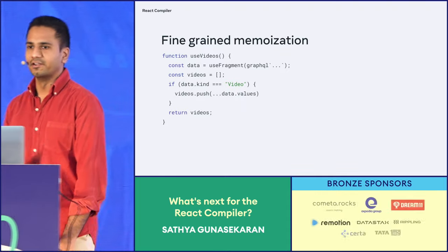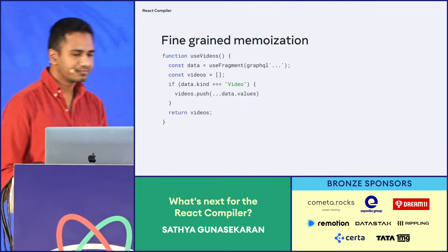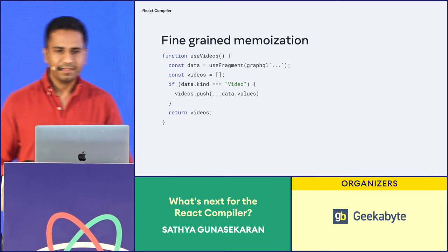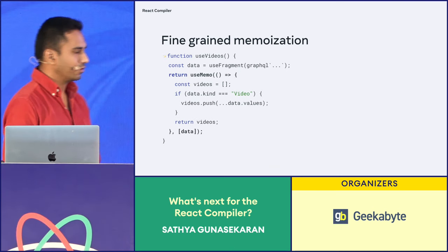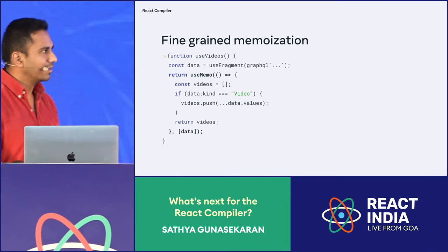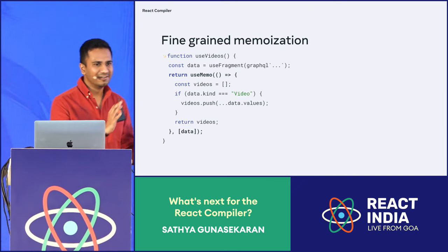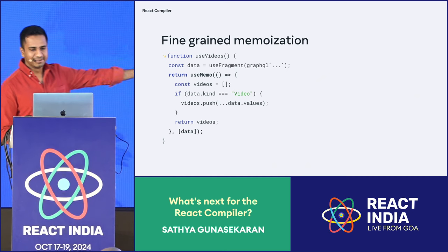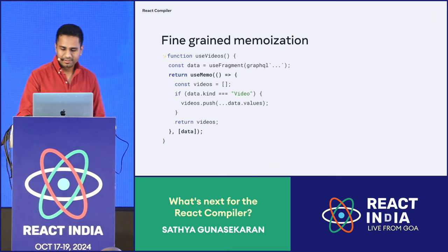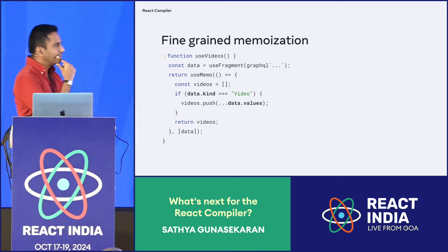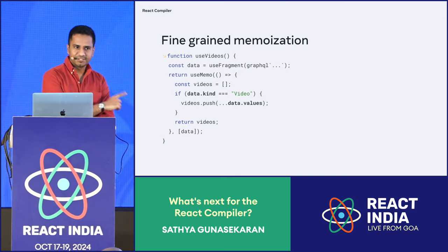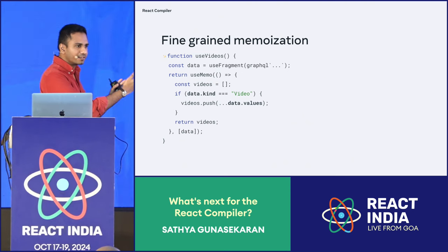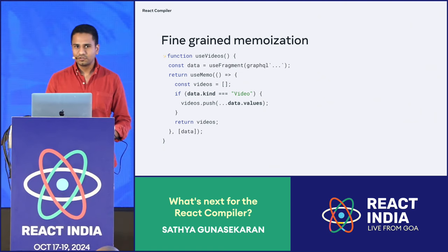One big focus area has been improving the generated code by doing more precise memoization. To make this concrete, let's examine a simple hook that fetches data, processes it, and returns a list of videos. After running through the compiler, this component is now memoized. In this example, the useMemo dependency is on data, which looks correct to us, right? But actually, we don't really need to invalidate the memo if data changes. We only need to invalidate if data.kind or data.values change, because they're the only ones being used in that memo block. So in this example, our memoization is too coarse-grained.